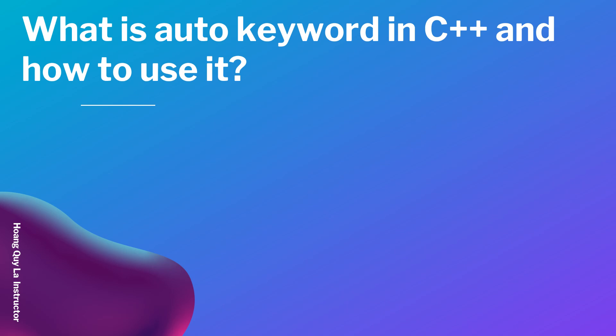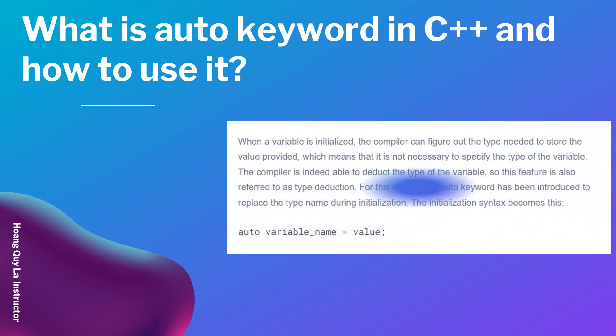Welcome to another YouTube video. In this video I will talk about the auto keyword in C++ and how to use it. When a variable is initialized, the compiler can figure out the type needed to store the provided value, which means it is not necessary to specify the type of the variable. The compiler is able to deduce the type — this feature is referred to as type deduction. For this reason, the auto keyword has been introduced to replace the type name during initialization.